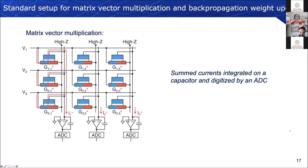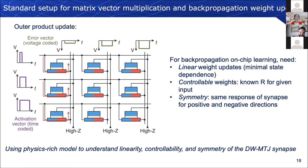Focusing on the synapses, here is a standard setup for matrix-vector multiplication and backpropagation weight updates. The circuit has synapses acting as weights controlling how much input voltages connect to the outputs. Currents flow through the tunnel junctions, each with its own resistance value dependent on the domain wall position, and they are summed, integrated on a capacitor, and digitized by an ADC. For backpropagation and weight updates, we pass current through the two terminals to adjust the domain wall position and therefore adjust the weights.